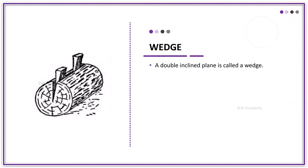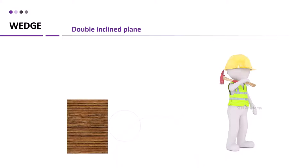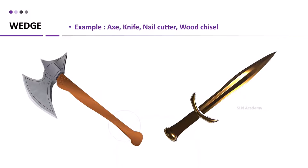A double inclined plane is called Wedge. It is a simple machine which helps to tear apart solid objects. Axe is one example of Wedge. Let us see how axe works in tearing the wooden object. Axe, knife, nail cutter, wood chisel are few examples of Wedge.